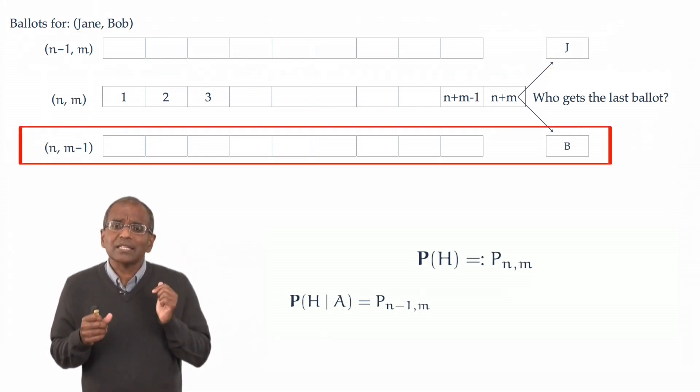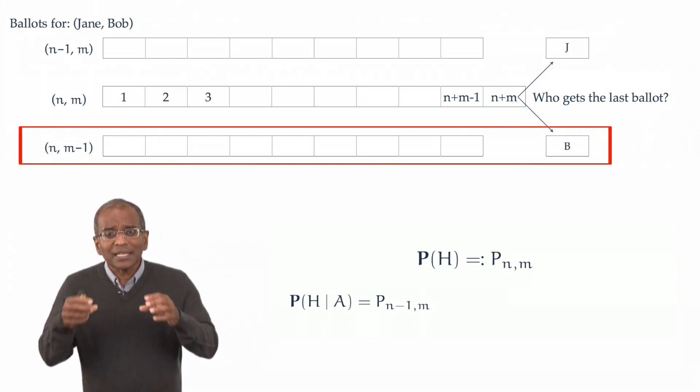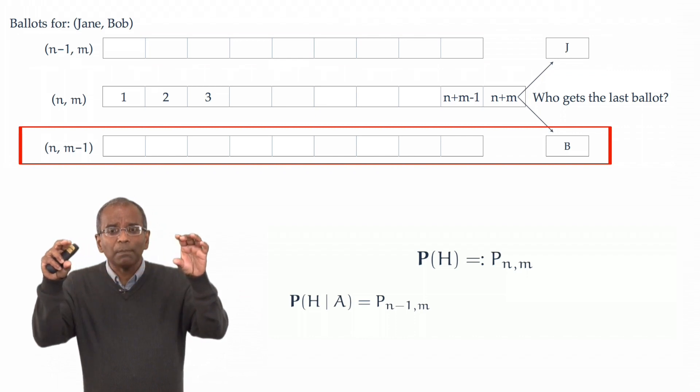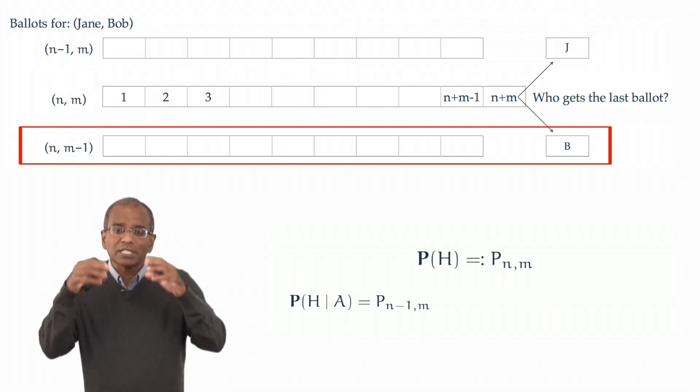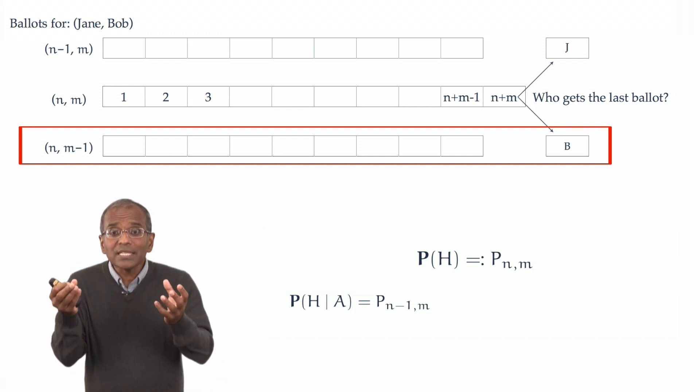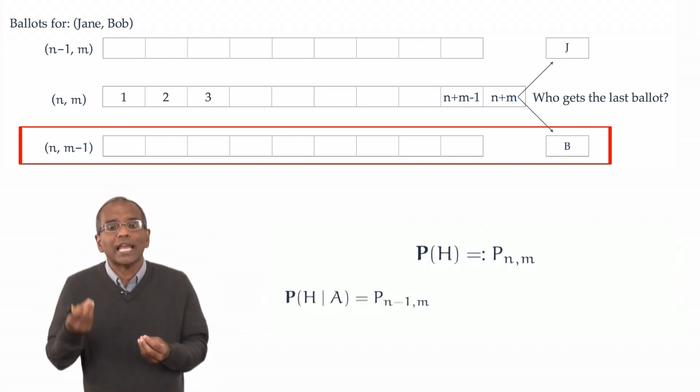What if Bob gets the last vote? In this case, we have n plus m minus 1 ballots, the first n plus m minus 1 ballots. Of these, Jane has to get her full complement of n, and Bob has to get m minus 1.